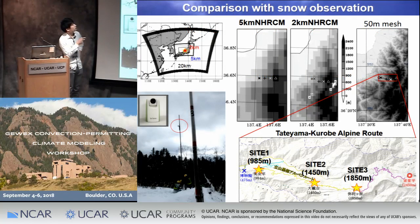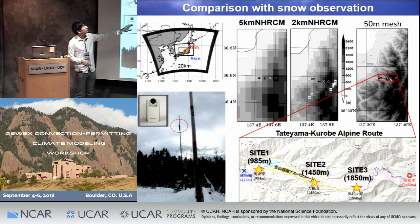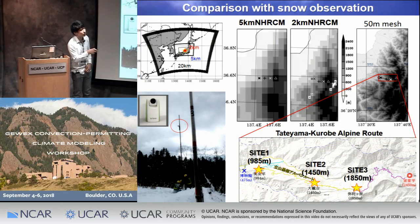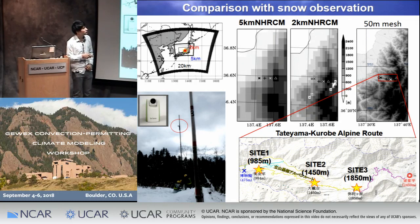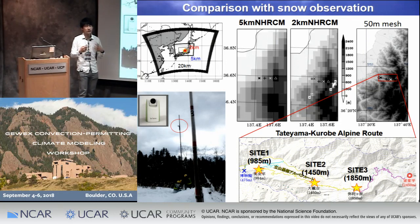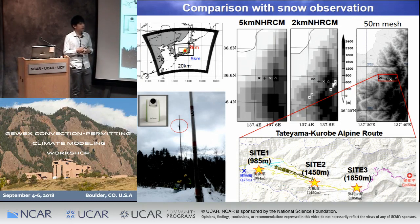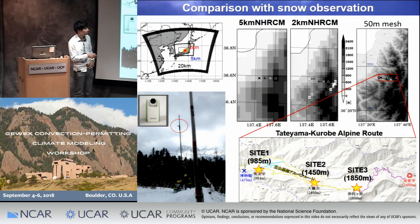This is the analysis domain for the 20 kilometer, 5 kilometer, and 2 kilometer runs, and we focus on this area. The topography at 5 kilometer and 2 kilometer resolution is shown alongside the realistic 50-meter mesh topography; you can see it is a little coarse in the 5 kilometer simulation. We focus on these mountainous areas. Since there are no observations offshore, we set up time-lapse cameras to observe snow depth during the snow seasons, at approximately 1,000 meters, 1,500 meters, and 2,000 meters above sea level.